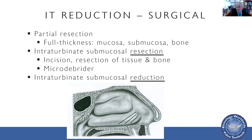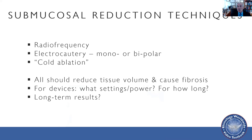You can also do intraturbinate submucosal reduction using radiofrequency, electrocautery, or cold ablation — which is still basically radiofrequency at a colder temperature. These techniques all reduce tissue volume, cause fibrosis, and cause shrinkage of the turbinate. One problem with these techniques is standardization: what setting should you use, how much power, for how long, how many passes? It's difficult to standardize and make sure you're not doing too much or too little. Also, what are the long-term results of simply coagulating or heating the tissue? It certainly causes a short-term result, but the question is whether it's going to be less effective long-term compared to actually removing the tissue using the microdebrider blade or an open incision approach.